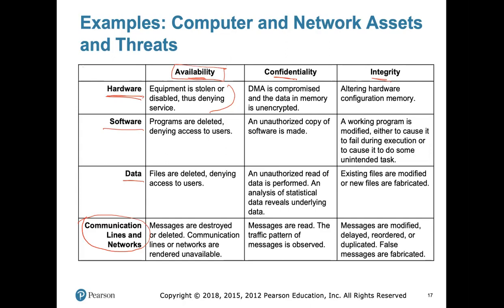Another threat example that alters confidentiality: assume the direct memory access component in a computer system is compromised, so that data in memory can now be read by an unauthorized adversary. This is a threat because no one has yet used this vulnerability to attack us, but it may or may not happen. That's why we call it a threat — one that would alter confidentiality.